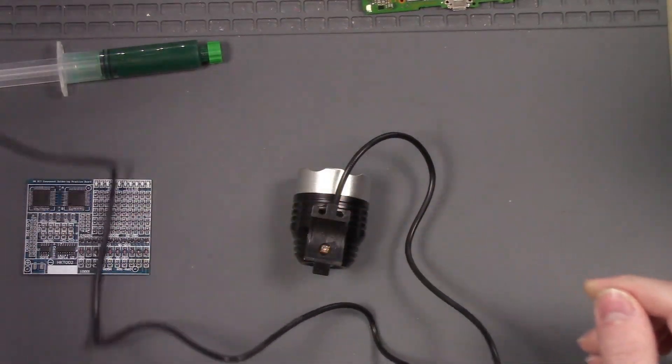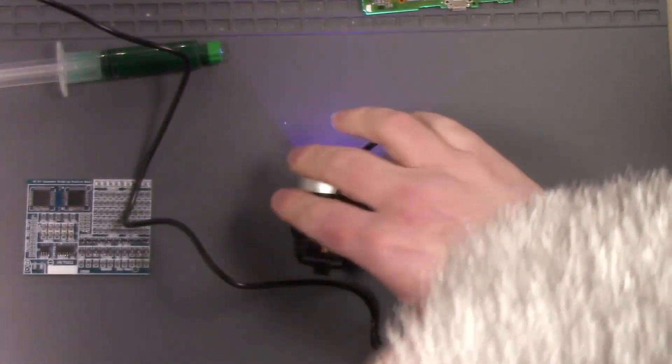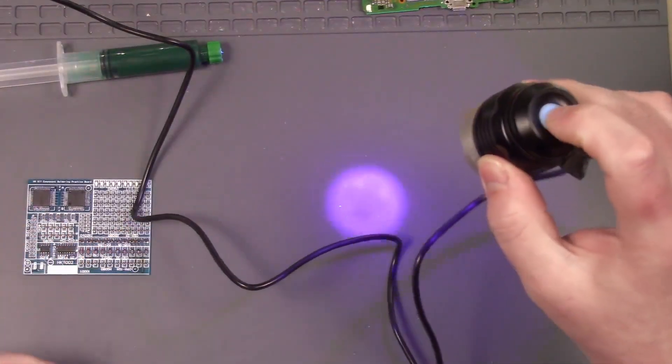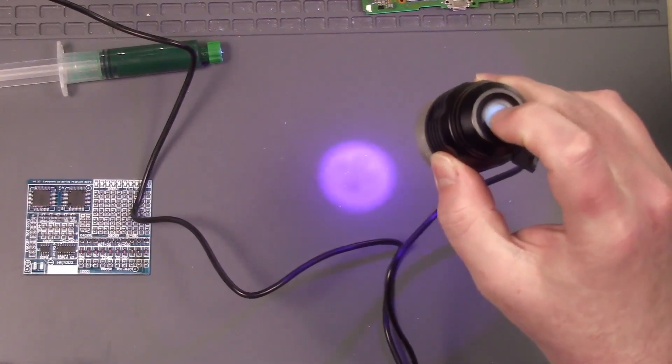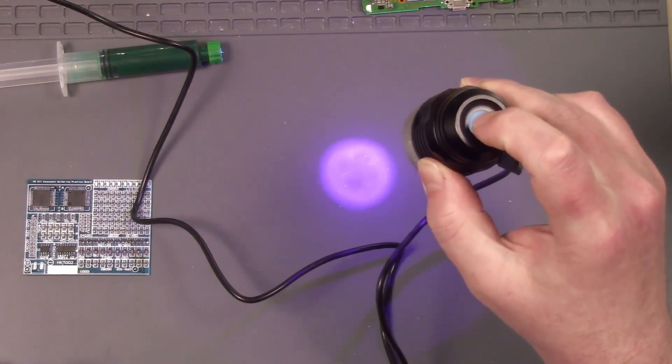So if I plug it into this USB port here it just comes on. See it's a UV light. Press the button, nothing happens. So I might take it apart and figure out what they did with that.